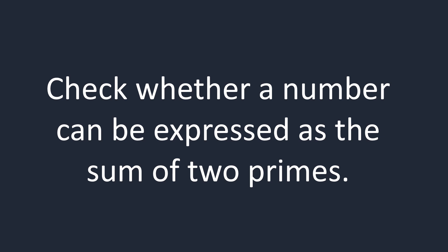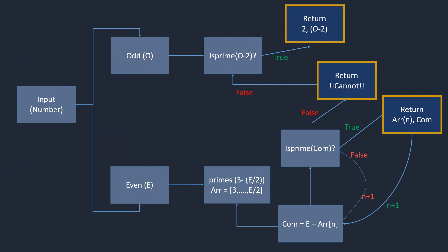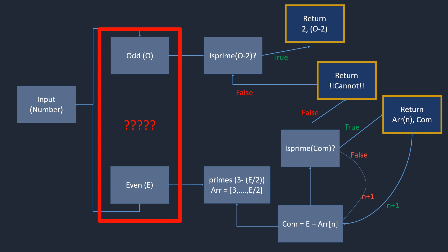We have to check if a number can be expanded as the sum of 2 primes or not. If it can be expanded as the sum of 2 primes then we have to return those 2 prime numbers as the output. The first step is that we have to receive the number from the user. Then the second step is to check whether that number is odd or even.